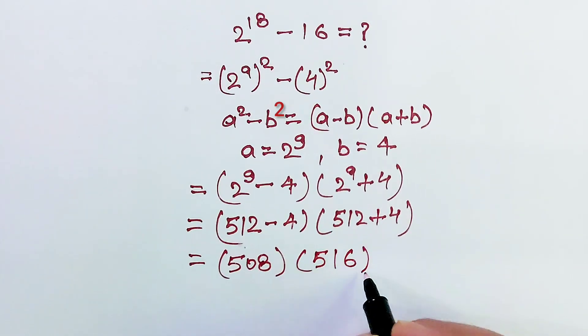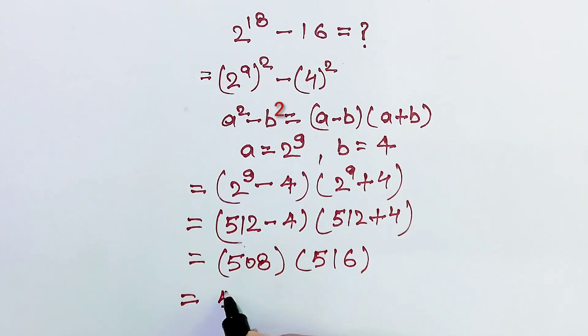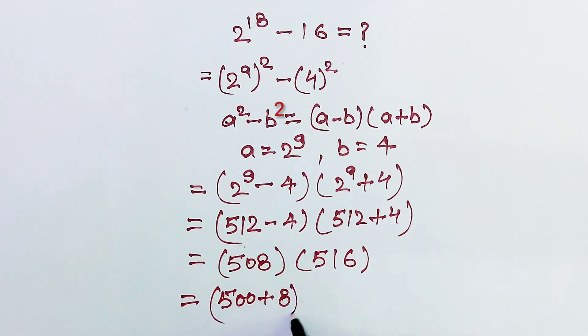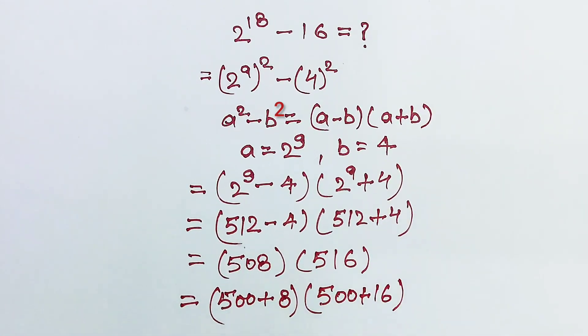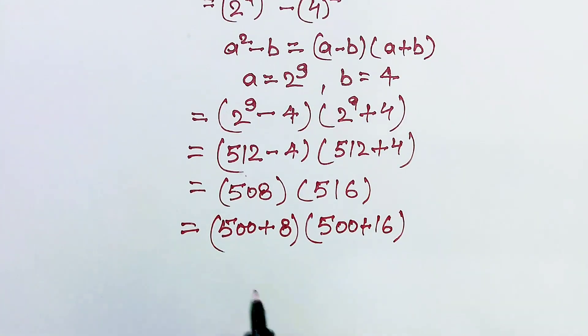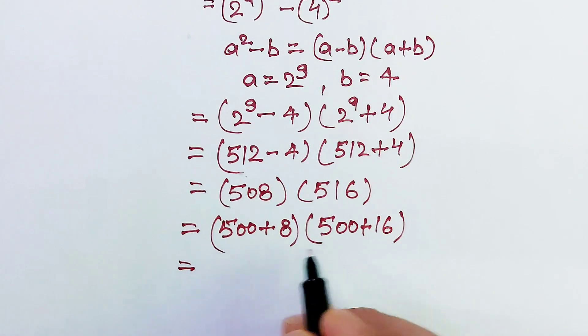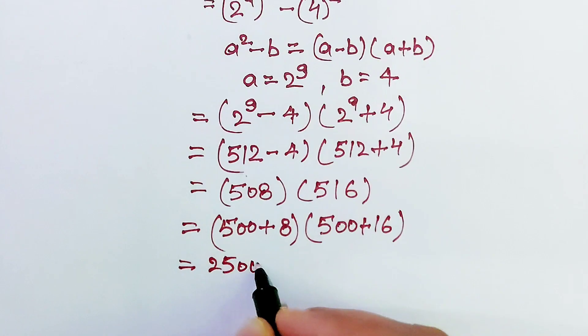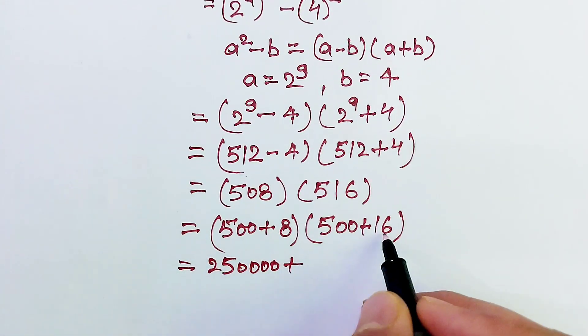And we can rewrite this 508 as 500 plus 8 and this 516 as 500 plus 16. Now we will multiply this term with this term. 500 into 500, 1 2 3 4, 4 zeros, plus 500 with this 16.